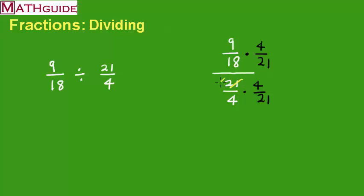So the 21 cancels with the 21, and the 4 cancels with the 4. So all of this stuff in the denominator cancels.